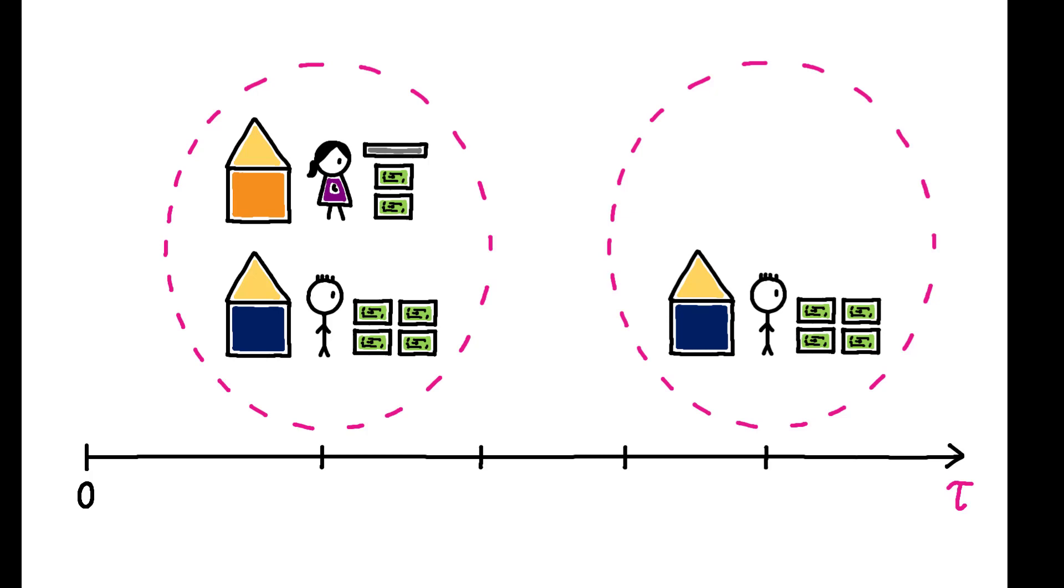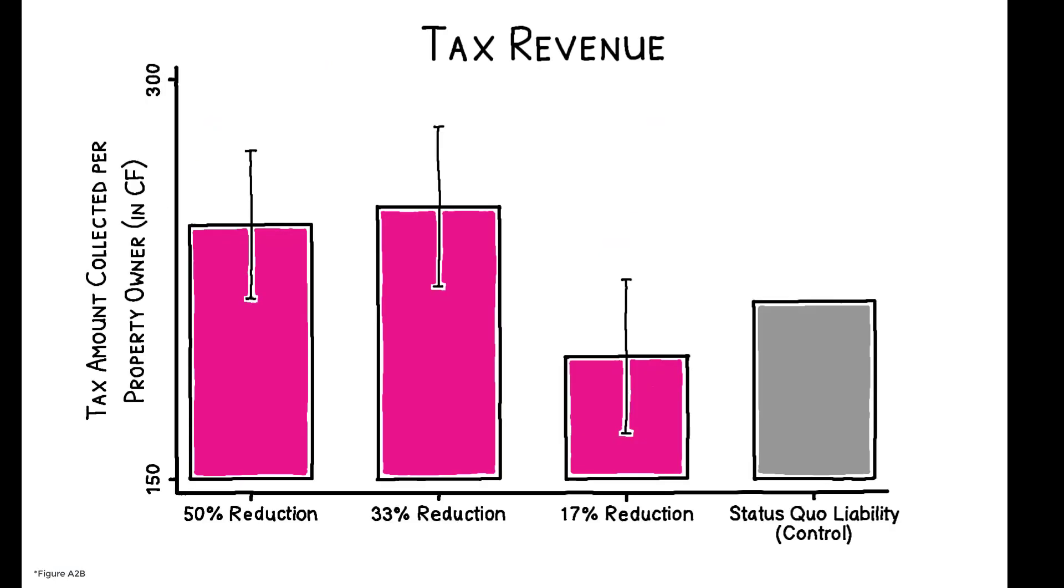And, because taxes in this setting are levied as a flat fee and partial payments are not allowed, higher compliance translated to higher revenue. A 1% increase in the tax rate reduces revenue by 0.243%.